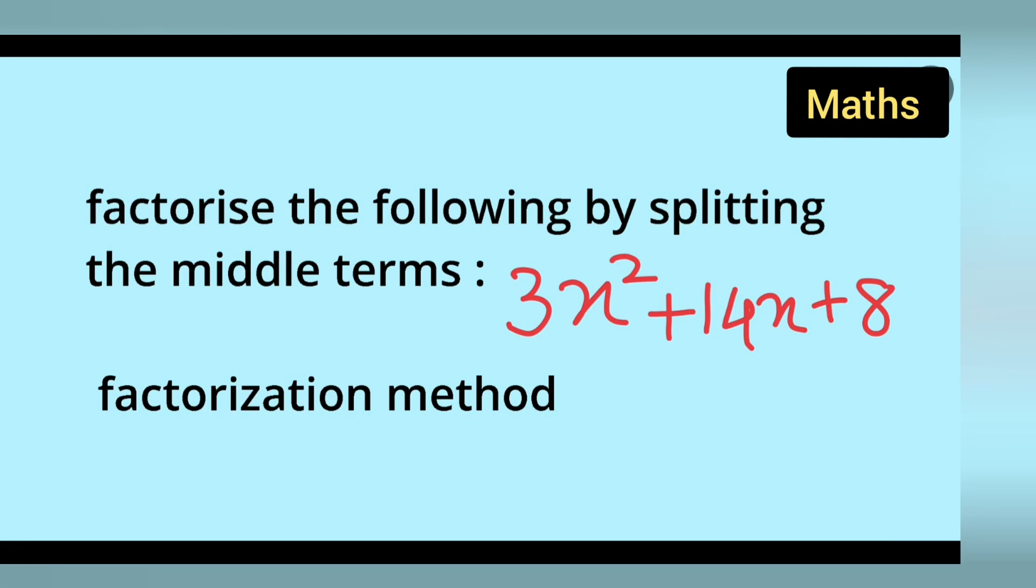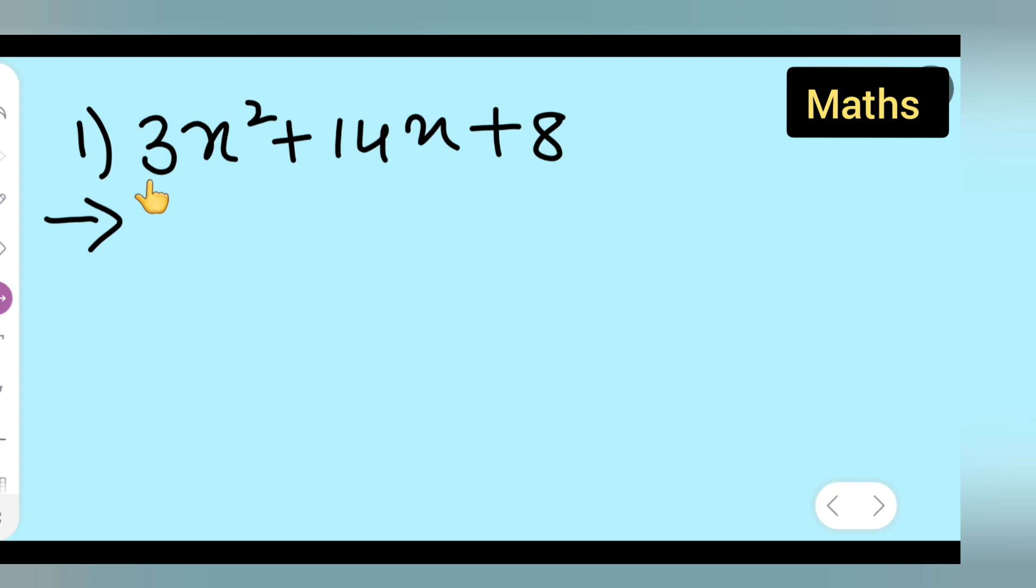So in today's class of mathematics, let us do the factorization method. That is, factorize the following by splitting the middle term: 3x square plus 14x plus 8. You can take down the question first. Write down 3x square plus 14x plus 8. The first step is you have to multiply the first term with the last term.